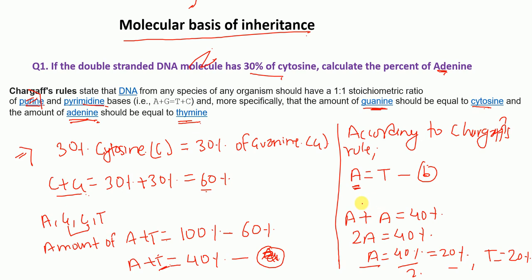In competitive examinations, this type of problem gives the percentage of one nitrogenous base and asks for the percent of others. The approach is simply to apply Chargaff's rule.